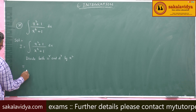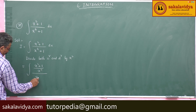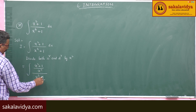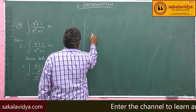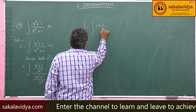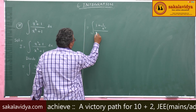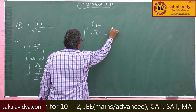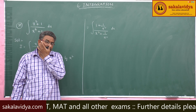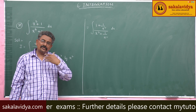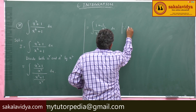So dividing both numerator and denominator by x square, we get x square plus 1 by x square upon x to the power 4 plus 1 by x square dx. This becomes 1 plus 1 by x square divided by x square plus 1 by x square dx. Now x square plus 1 by x square is related to x minus 1 by x whole square.